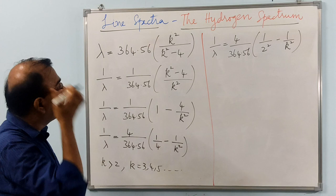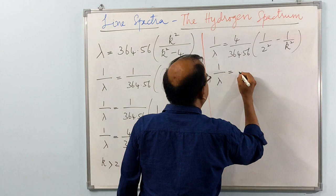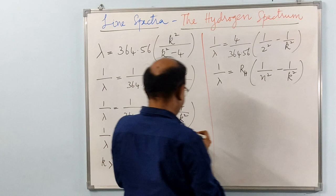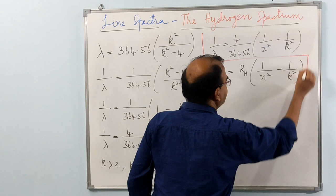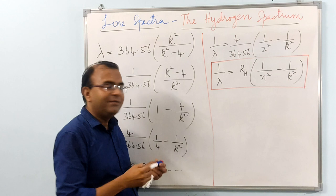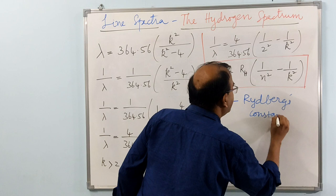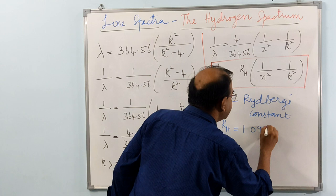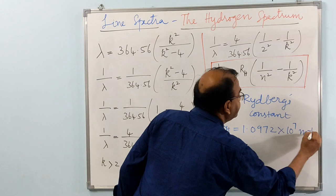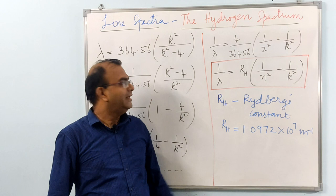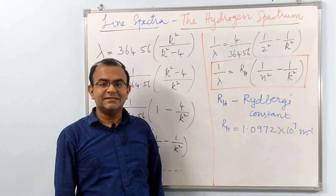And this could be written again as 1 over lambda equals RH times 1 over n squared minus 1 over k squared. This is called the Rydberg equation. For the hydrogen atom, the value for this RH, which is called the Rydberg constant, is equal to 1.0972 times 10 to the power of 7 per meter. This is a general equation for calculating the different wavelengths of the hydrogen spectrum. This equation is called the Rydberg equation and Johannes Rydberg along with Walter Ritz provided this most general form of the equation.